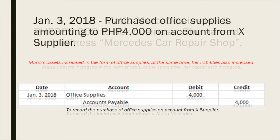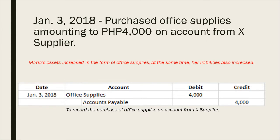The next transaction is January 3, 2018, where she purchased office supplies amounting to 4,000 pesos on account from a supplier. Maria's assets increased in the form of office supplies.